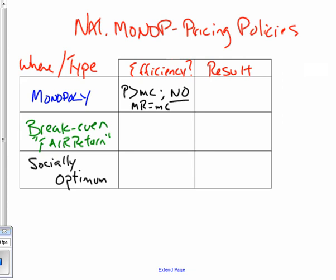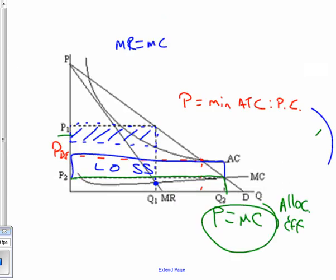For the break-even or fair return price, this is set by a government agency — the firm won't voluntarily lower its price since it's in the business of maximizing profit, not being nice. So to remain the only provider, say the only electricity provider, the monopoly must comply with the price the local government board sets, which is P equals ATC. That happens to be close to the minimum point of ATC, though it doesn't always look that way — that's just how it was drawn.